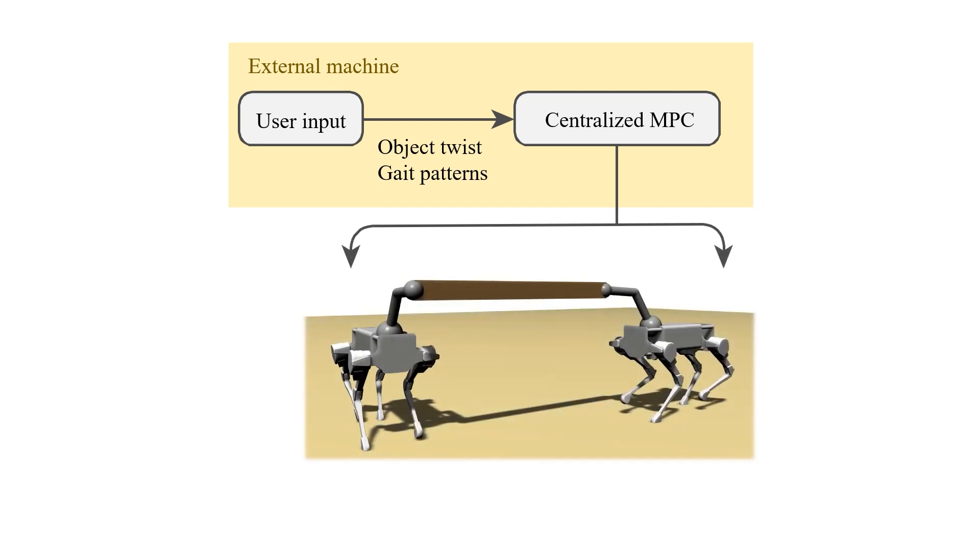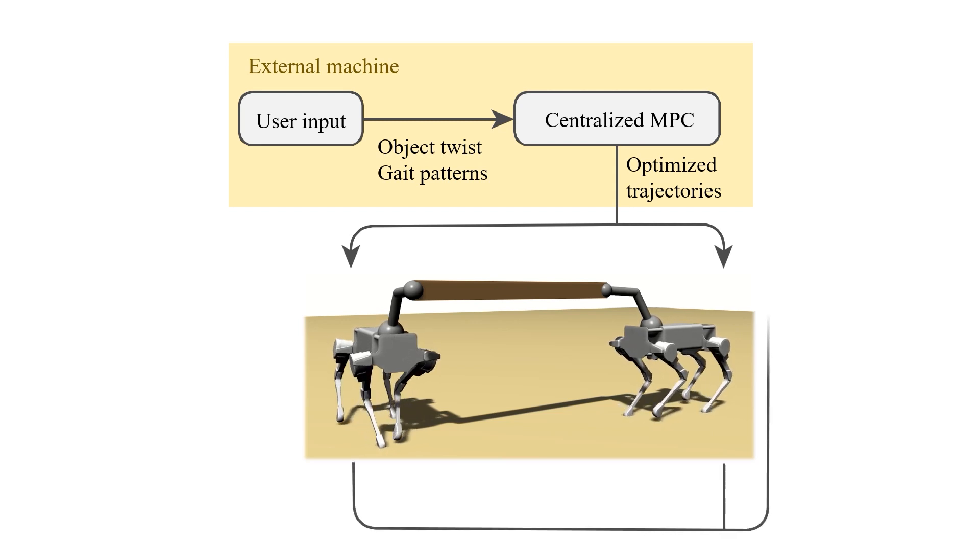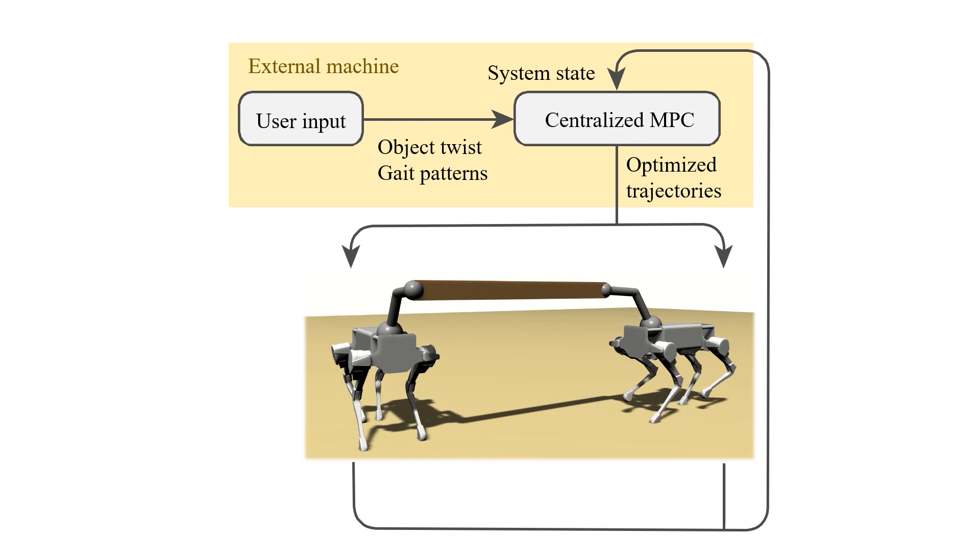Based on these, our algorithm optimizes dynamically feasible trajectories for the whole system through a single trajectory optimization. Eventually, all agents send their estimated state to our planner, which achieves feedback by operating in a receding horizon fashion.